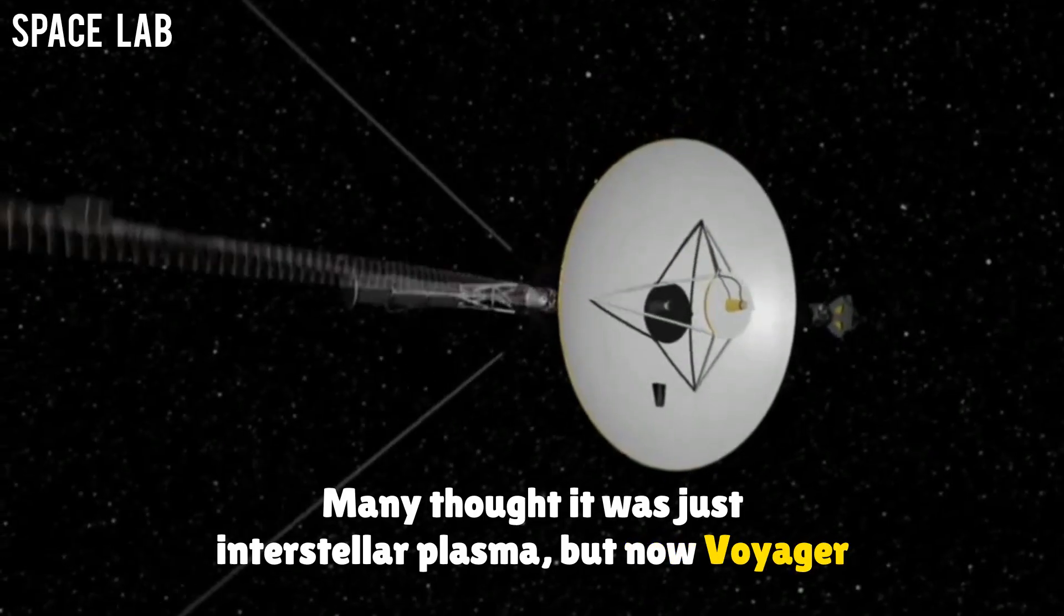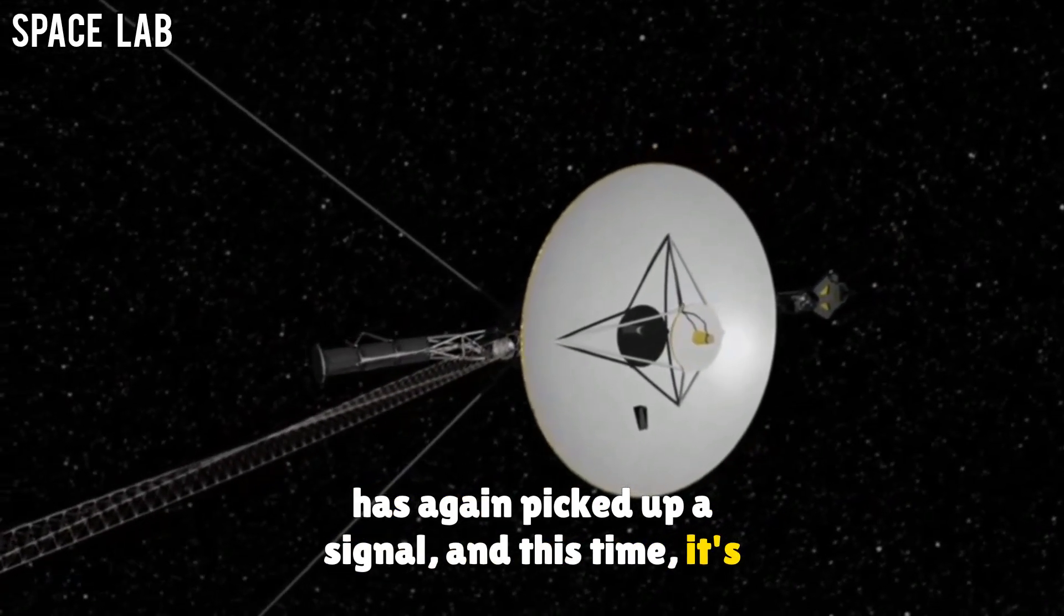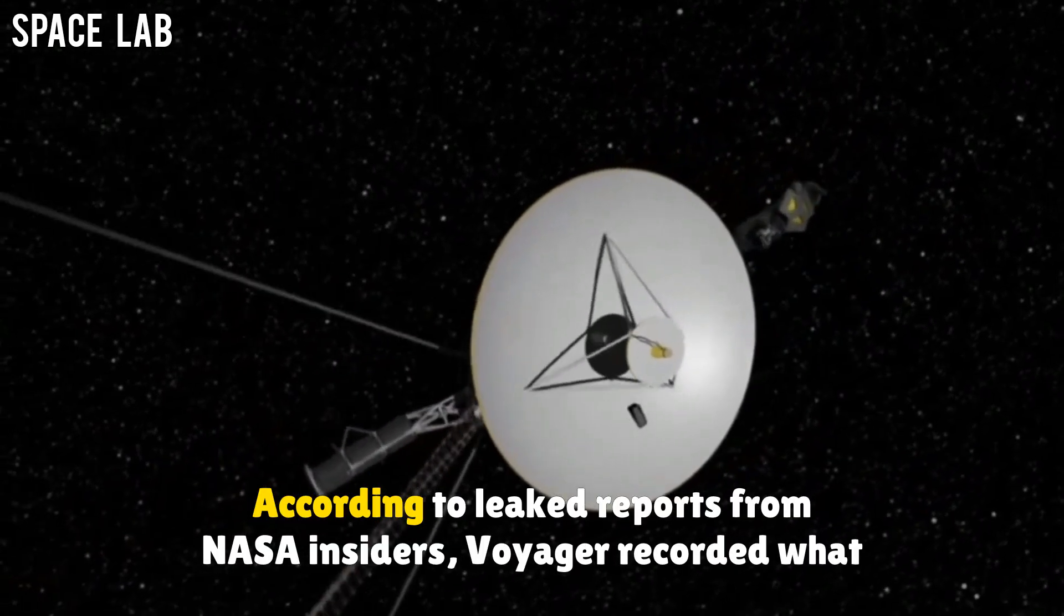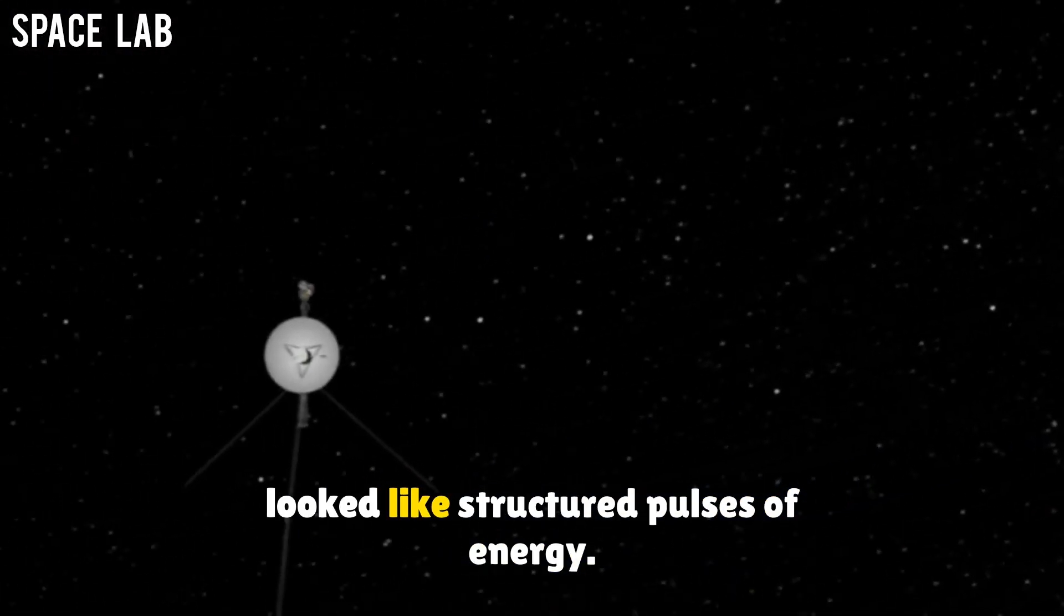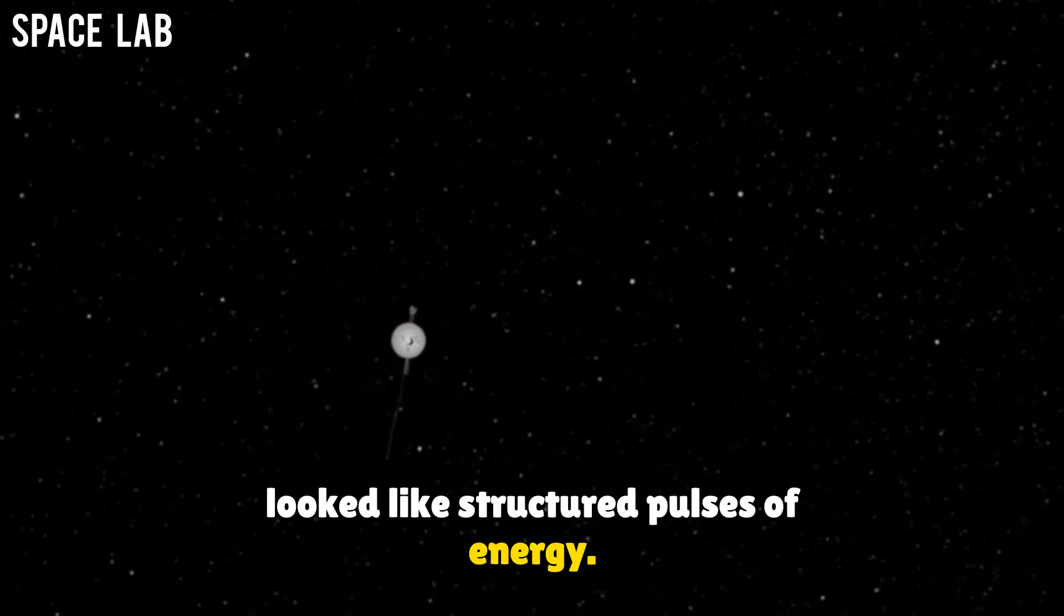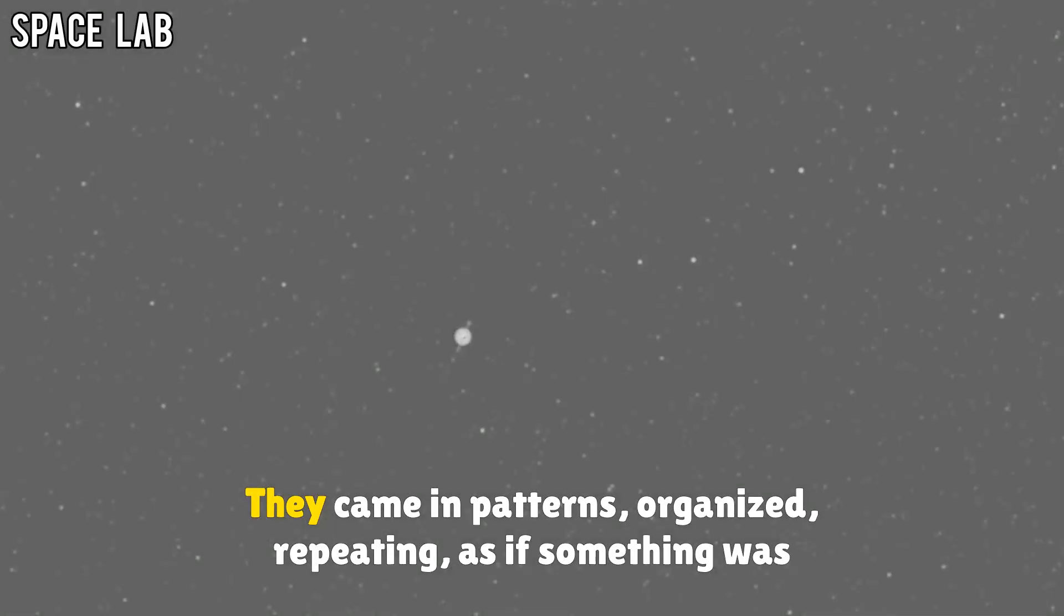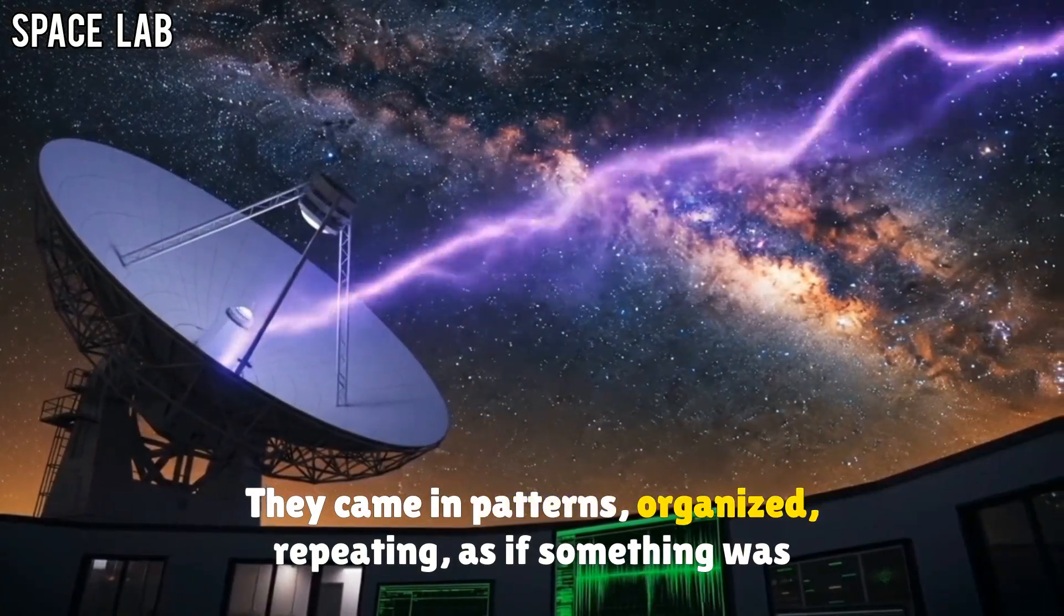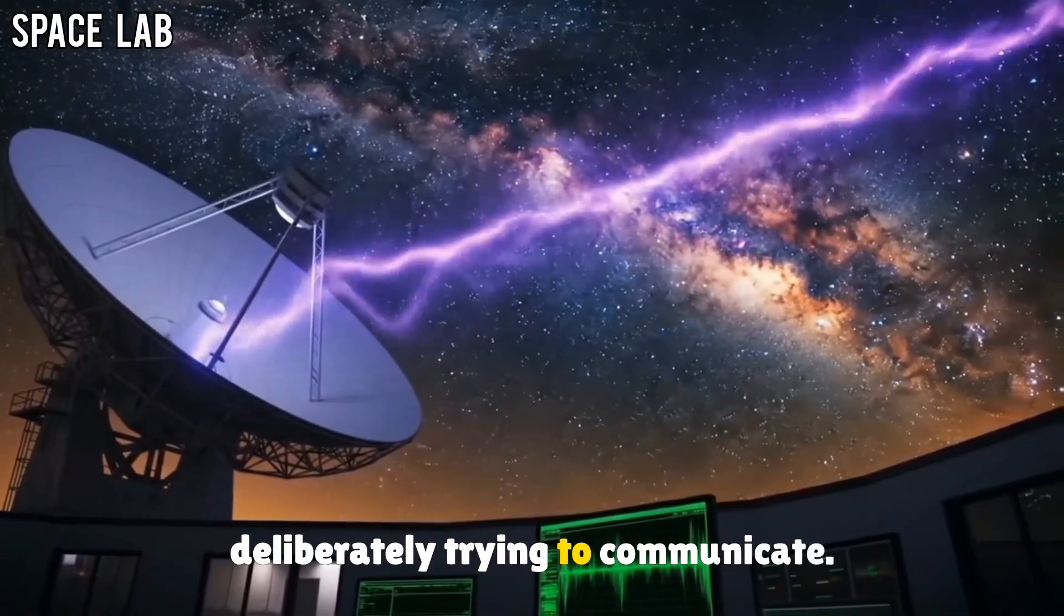But now, Voyager has again picked up a signal, and this time, it's different. According to leaked reports from NASA insiders, Voyager recorded what looked like structured pulses of energy. These weren't random bursts of static. They came in patterns, organized, repeating, as if something was deliberately trying to communicate.